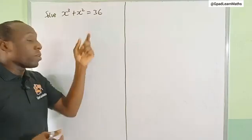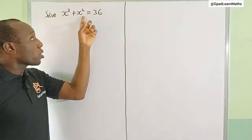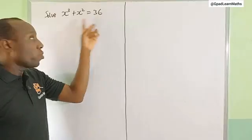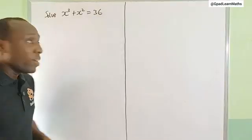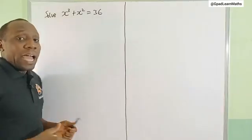Hello friends, let's solve this Olympiad question on the board: x³ + x² = 36. We need to find the value of x. Looking at this 36 here, I can split 36 into two numbers, one would be a perfect cube, the other would be a perfect square.